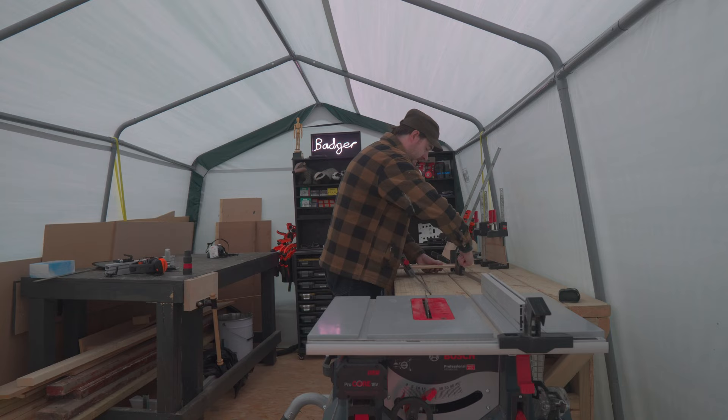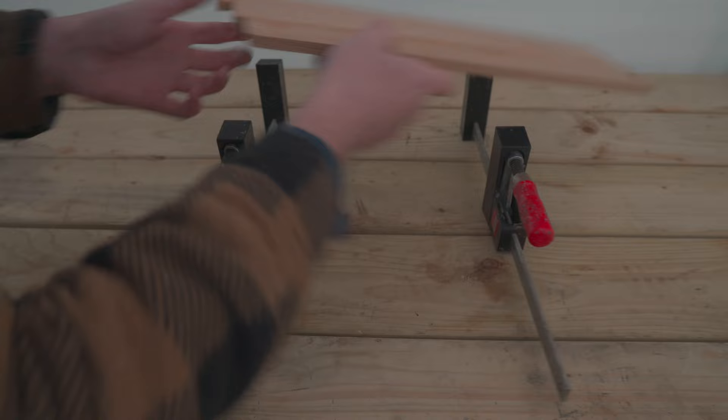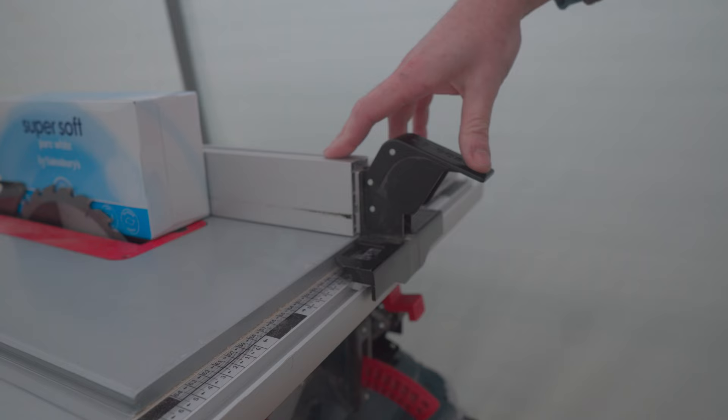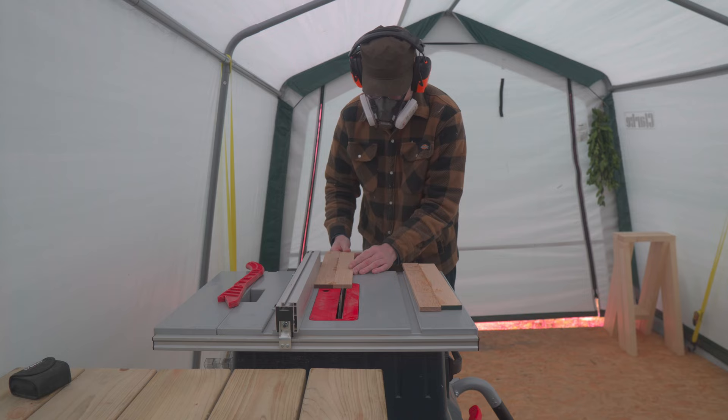So I leave these overnight to dry, and then the next day I can come and get the clamps off. Now these need ripping down to the size of the box, so I take them over to the table saw and move the fence over so that it's just slightly bigger than the box. Now I can get these panels ripped down to size.